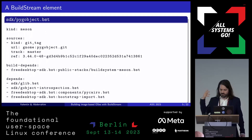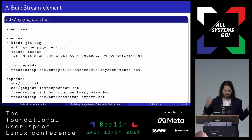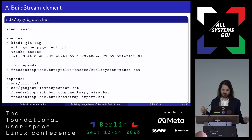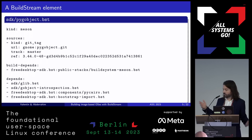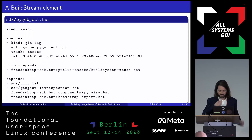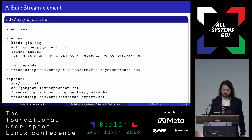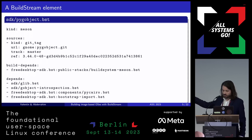This is an example of an element. In a Buildstream project, you have lots of files with the extension .bst and they describe how to build each component. For example, we have a PyGObject, which uses Meson to build. We describe the sources, and we also describe what the dependencies are. There are two types of dependencies: the build dependencies and the runtime dependencies. Everything will be pulled into the build container to build PyGObject. And if you build anything depending on PyGObject, everything that is in the depends part but not in build-depends will also come in. Because we want to produce a reproducible build, we have the reference of which git commit we want to use.